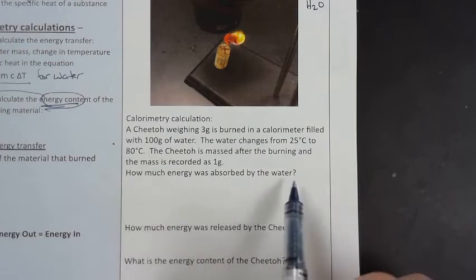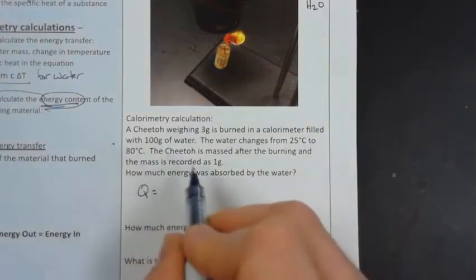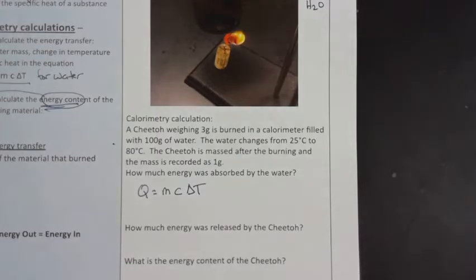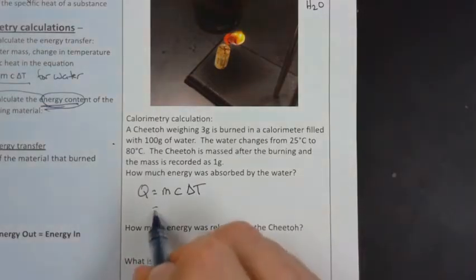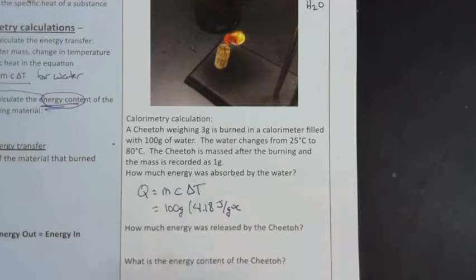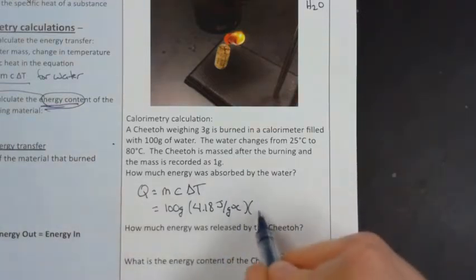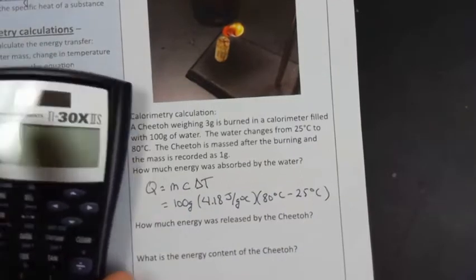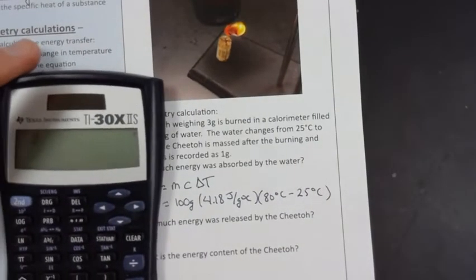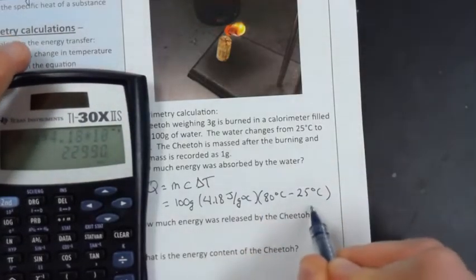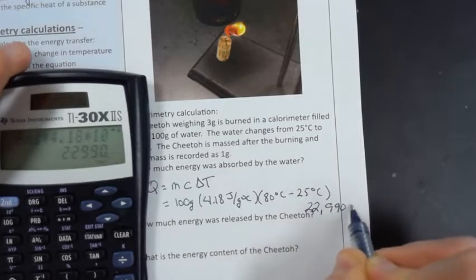How much energy was absorbed by the water? We've got a temperature change of the water, we've also got a mass of water, and we know the heat capacity for water. So we can use our Q equals MC delta T equation. Here the mass of the water is 100 grams, the heat capacity is a pretty standard 4.18 joules per gram degree Celsius, and our temperature change ended at 80 degrees and started at 25 degrees. So the energy that the water absorbed is 80 minus 25 times 4.18 times 100. Q here is equal to 22,990 joules.